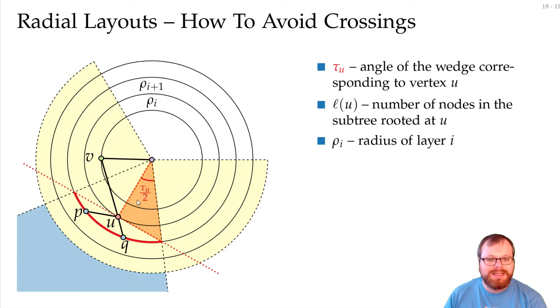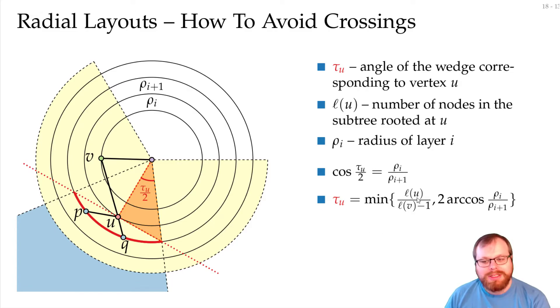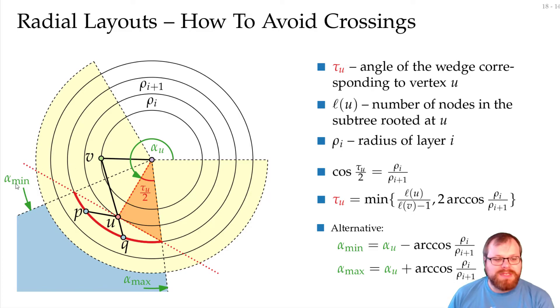If we take the cosine of this angle, then it's the ratio of this edge here, which goes to layer i, so it has length rho i, and the edge to this layer here, which has length rho i plus one. So the cosine of this angle here is rho i divided by rho i plus one. So the whole angle here that we want to use to get the circular arc is two times arc cosine rho i divided by rho i plus one. But we have to make sure that it stays inside this yellow region, inside the region that we reserved for this vertex u. So it's actually the minimum of what we compute here and the size of u divided by the size of v minus one. There's an alternative way to say this that we will also use in our pseudocode on the next page, which is we specify the minimum angle and the maximum angle that we can use to place the children of u. So the minimum angle that we can use is the angle that we assigned to u minus arc cosine of this and the maximum is the whole thing plus arc cosine of this.